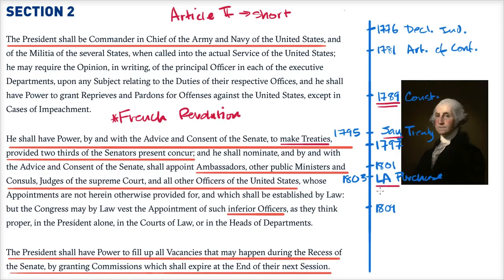Jefferson famously negotiated with Napoleon Bonaparte, because Napoleon's navy had been destroyed at Trafalgar, so he was in no position to protect territory halfway across the world. This drove Jefferson's critics crazy, because Jefferson had been a big proponent of limited presidential authority before becoming president. Yet as president, he expanded it by seizing on this treaty negotiation power not explicitly in the Constitution, and hugely increased the landmass of the United States.